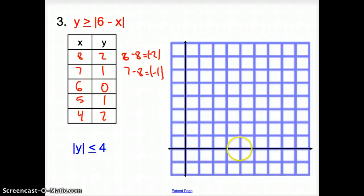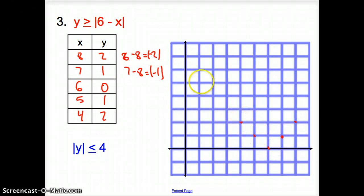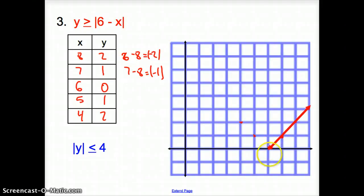So I plot the points: (8, 2), (7, 1), (6, 0), (5, 1), (4, 2). Now what kind of line am I going to draw? I'm going to draw a solid line through these points — forming a V-shape — solid because of the greater than or equal to sign.